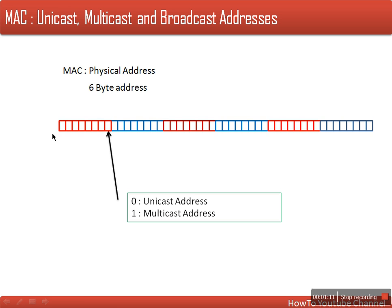There is a trick: if we are given a MAC address and someone asks whether it is a unicast, multicast, or broadcast address — in the case of unicast and multicast, you need to check the first byte, and within that byte you need to look at the least significant bit. If this bit is 0, it means it is a unicast address. But if it is 1, that MAC address is a multicast address, meaning there is a group of members supposed to receive that packet.